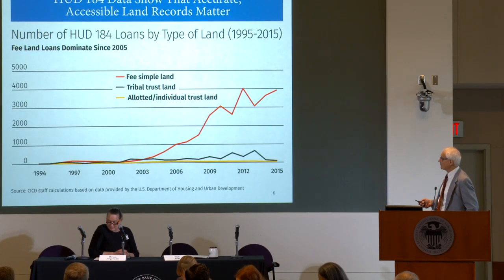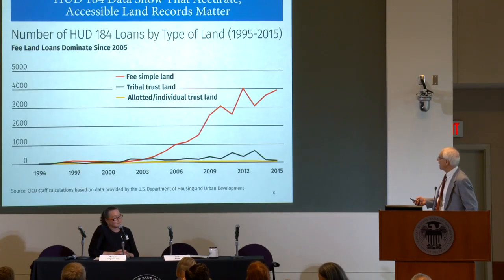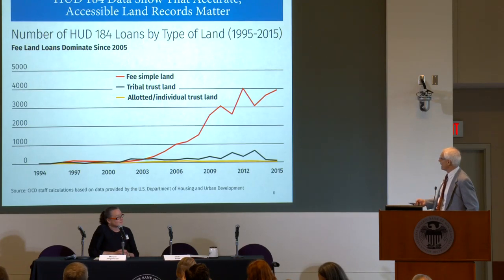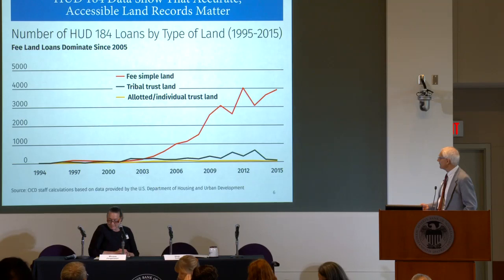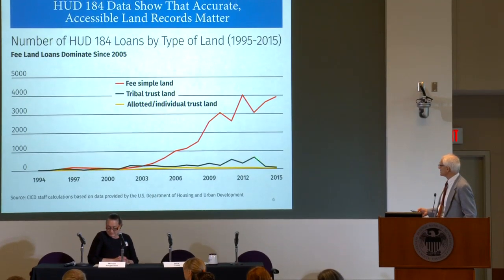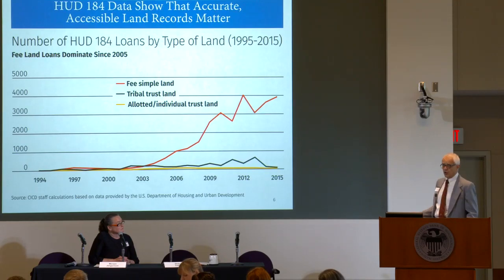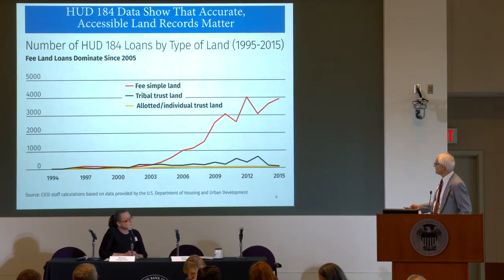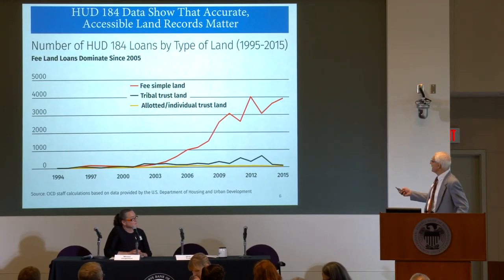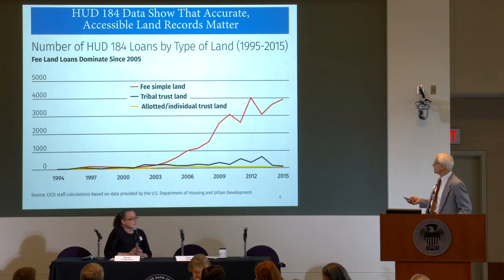The well-known fact is that use of HUD-184 loans on fee land really took off after off-reservation lending was opened up in 2005. The black line showing use on tribal trust land, and the yellow line showing individual trust, have stayed very flat and low, while fee land use just exploded. Now 90% of 184 loans are on fee land, not trust.